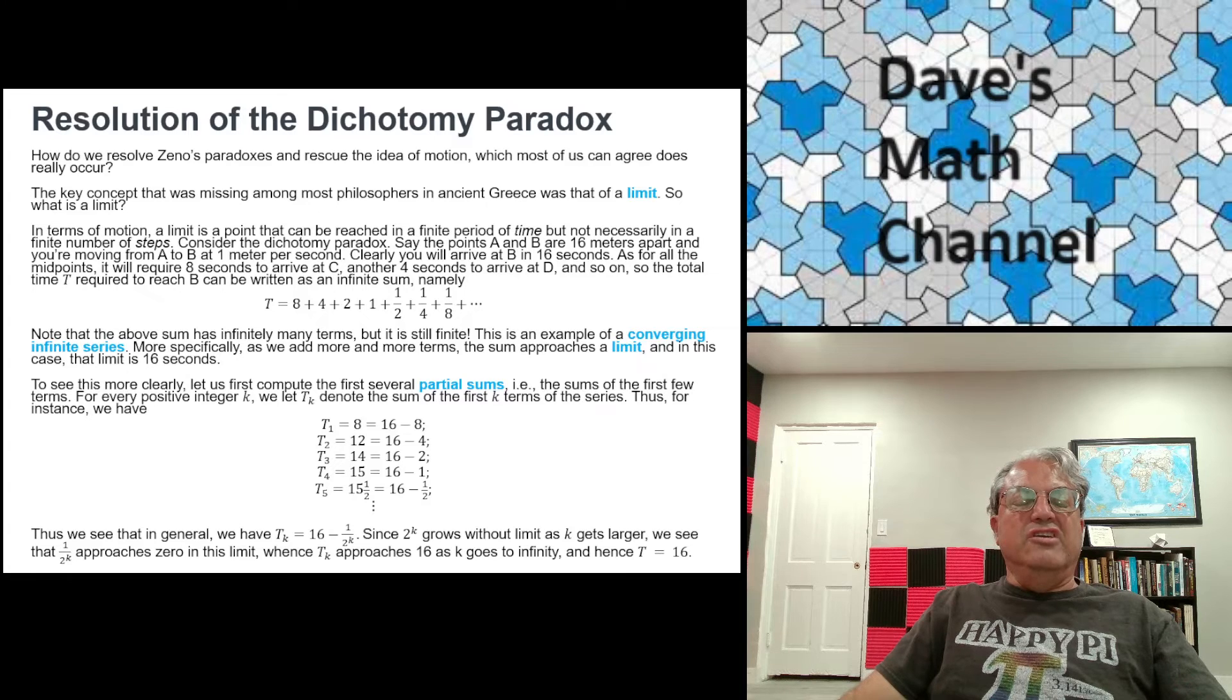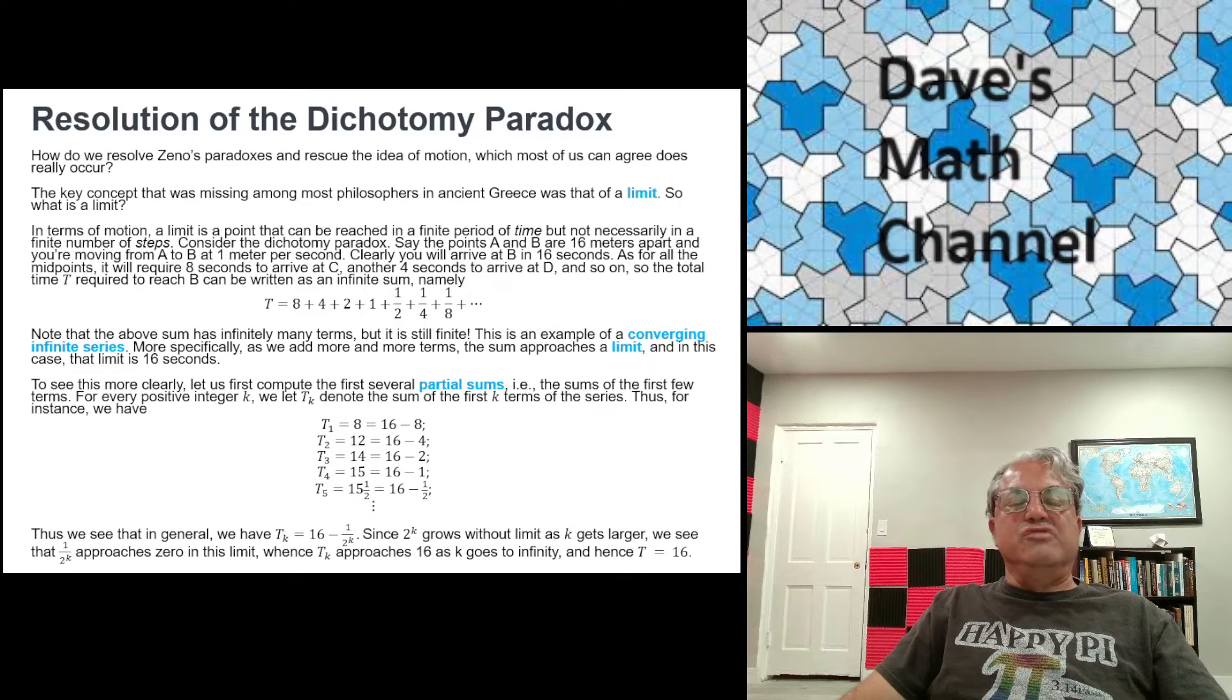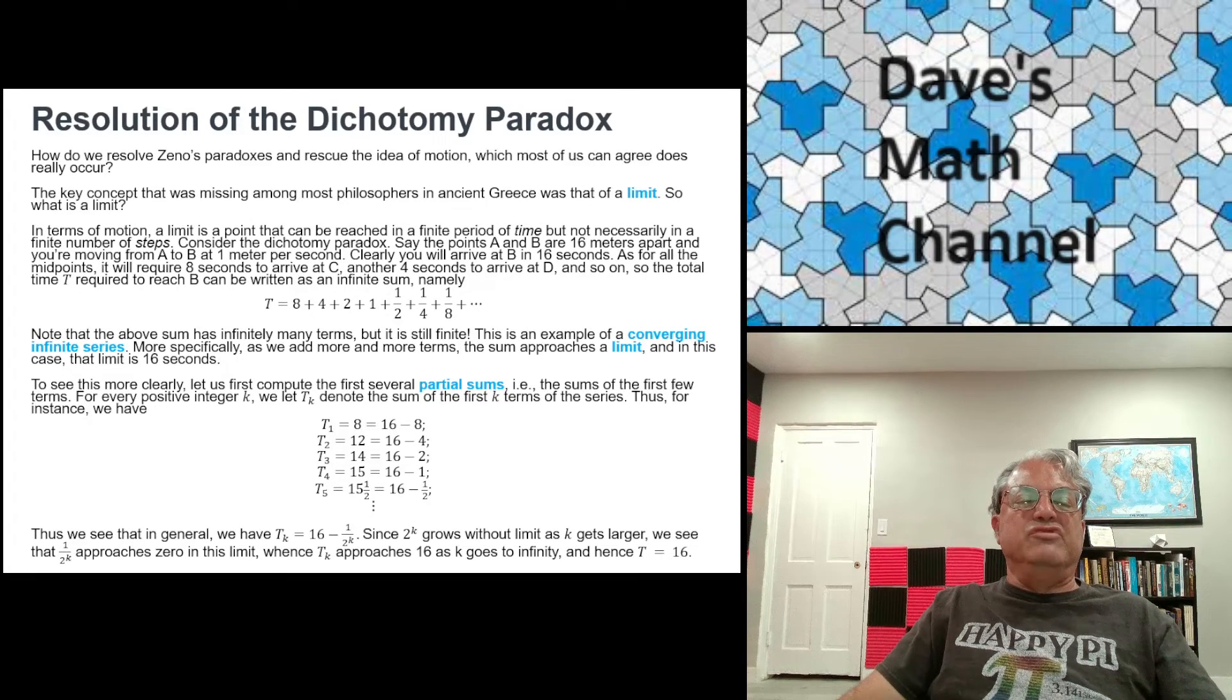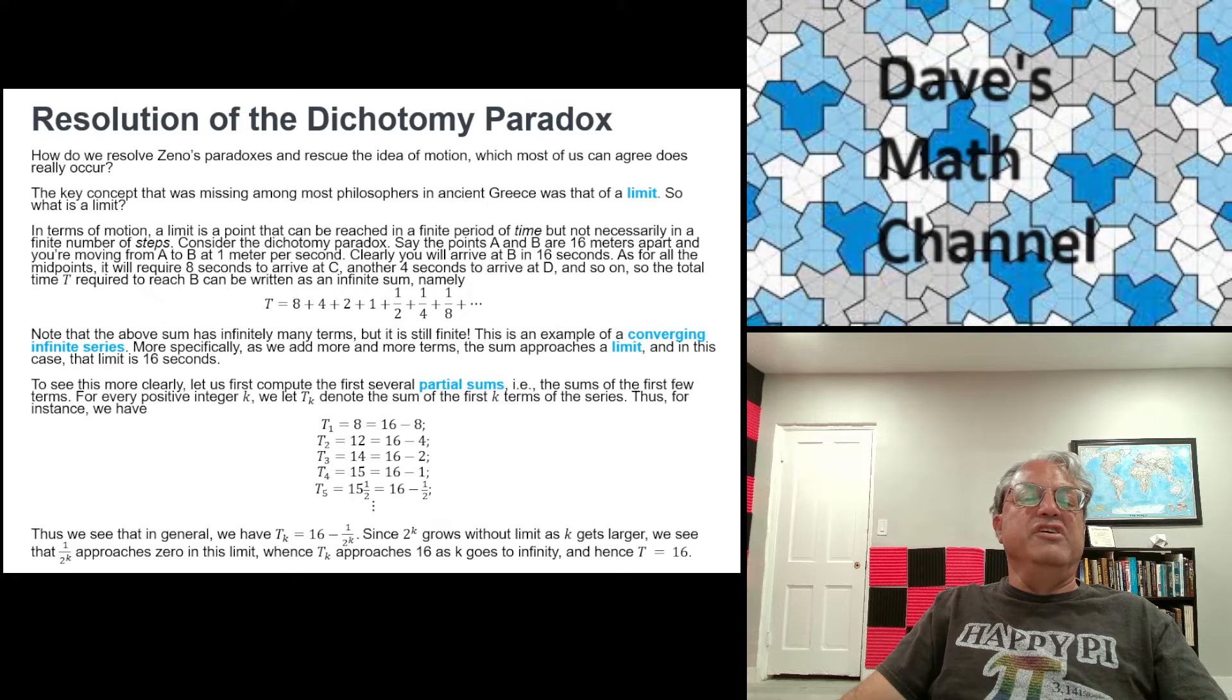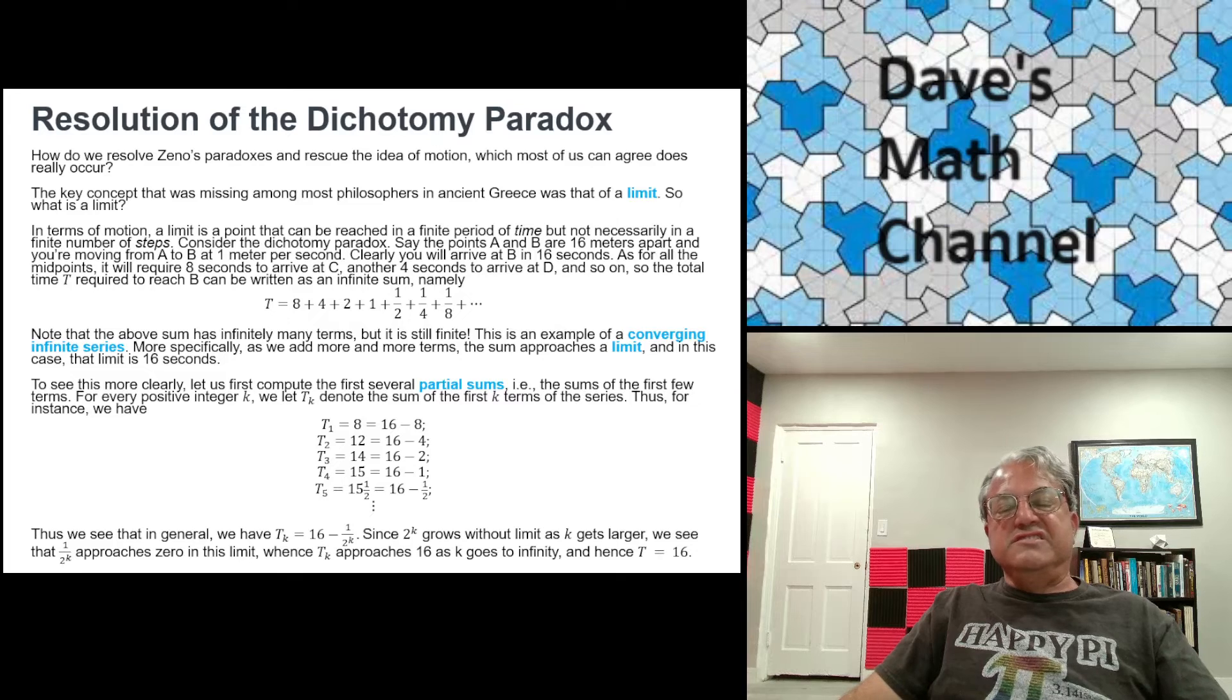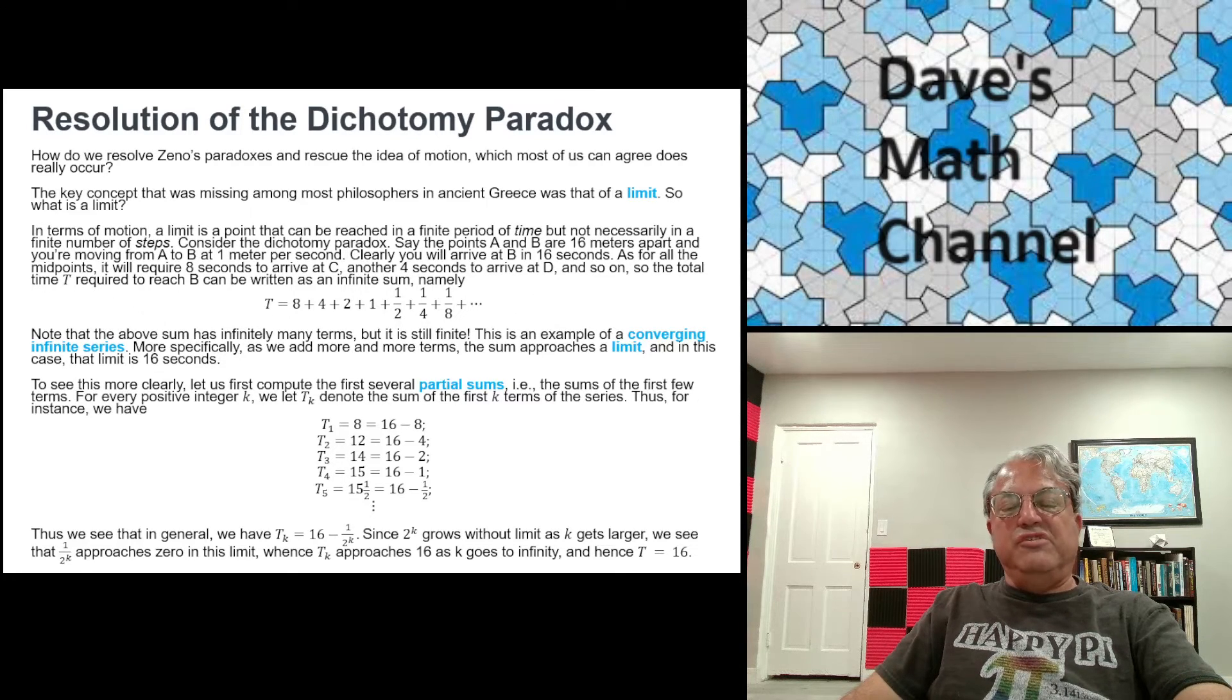That's how you resolve this paradox. So you have to use a limit. And once you understand what a limit is, and that you can get a limit by taking something, a process that takes infinitely many steps, and that concept of a limit makes sense. Of course, you have to do some math to kind of prove this rigorously. But I think you get the idea. This limit exists, and this limit is 0. And so the limit of the time, the total time, or the total time, I guess, it takes to go from A to B is going to be 16 seconds. Or the distance is 16 meters, if you like. So anyway, that resolves the dichotomy paradox.